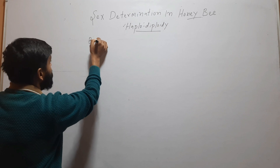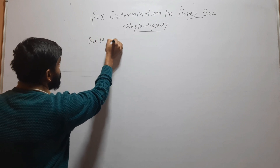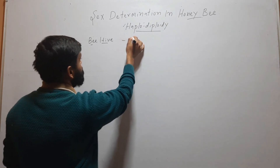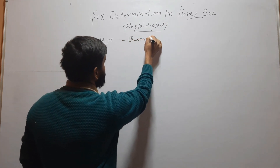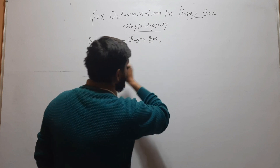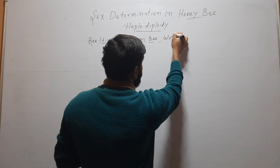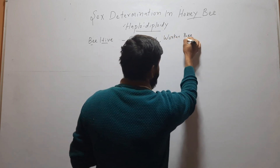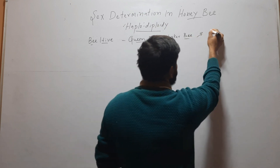In a bee hive, you will find three types of bees: queen bee, worker bee, and drone bee.